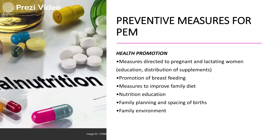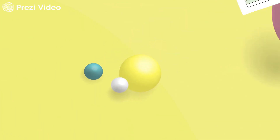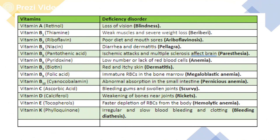Preventive measures include health promotion through instructions provided to pregnant and lactating women for the promotion of breastfeeding, measures to improve overall family diet, nutrition education, family planning, and spacing of births. The environment must also be built up. Specific protection includes protein and energy-rich diets, immunization, food fortification, early diagnosis and treatment, periodic surveillance, early treatment of infections and diarrhea, deworming of heavily infested children, and development of feeding programs during epidemics.